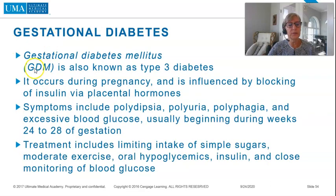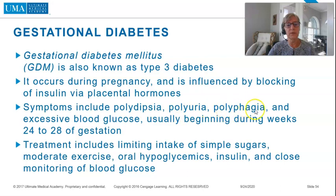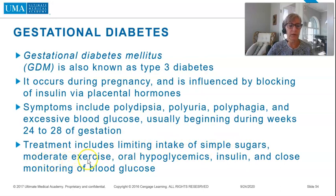Gestational diabetes, GDM, also known as type 3 diabetes, occurs during pregnancy and is influenced by blocking of insulin via placental hormones. Symptoms include polydipsia, polyuria, polyphagia, and excessive blood glucose, usually beginning during weeks 24 to 28 of gestation. Treatments include limiting intake of simple sugars, moderate exercise, oral hypoglycemics, insulin, and close monitoring of blood glucose.